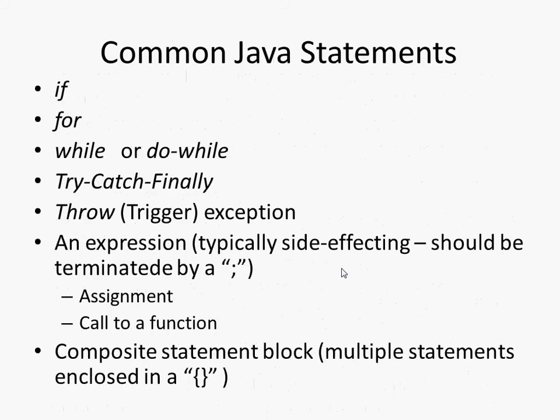The types of statements you'll see a lot include: if statements, for statements, while or do-while, try-catch-finally, throw as a statement or exception, and a statement that's simply an expression. For an expression to be a statement it needs to do something — merely computing a value accomplishes nothing. So the expressions that are statements are typically assignments or calls to functions that accomplish something. We can also have a composite statement — a statement composed of sub-statements, possibly with variable declarations.